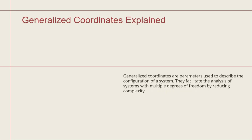What is meant by generalized coordinate? A generalized coordinate is one of the parameters used to describe the system configuration. It analyzes the system with multiple degrees of freedom by reducing the complexity. That is the most important. Generalized coordinates form an independent system.